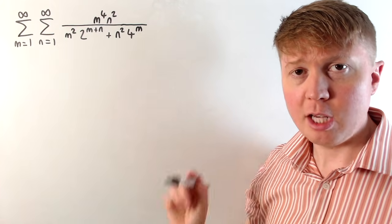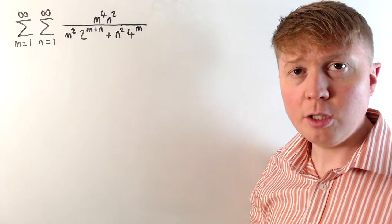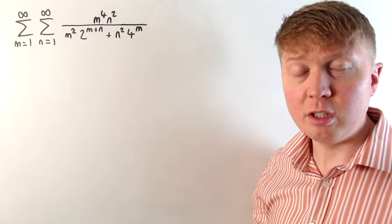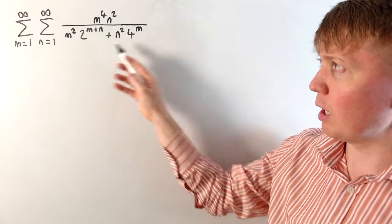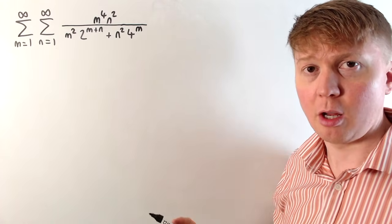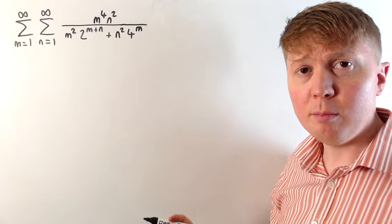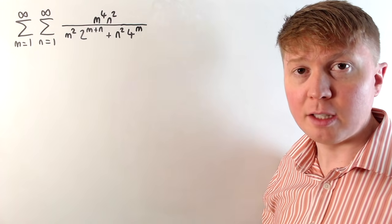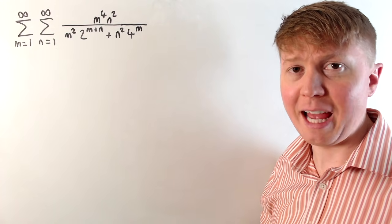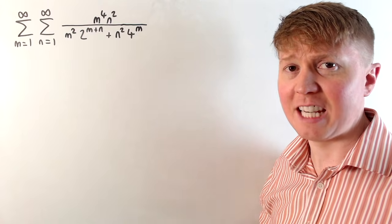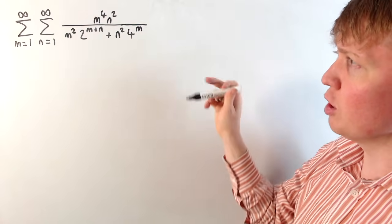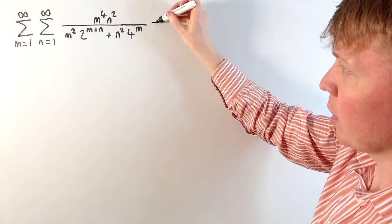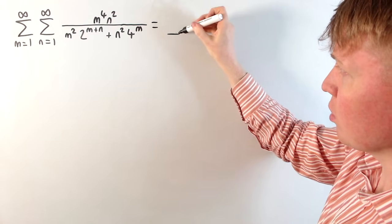We're going to evaluate this double series, and our first step is just going to explore what we can do to simplify within this fraction. We could start by dividing through by m squared and n squared, which will simplify the numerator a little bit.